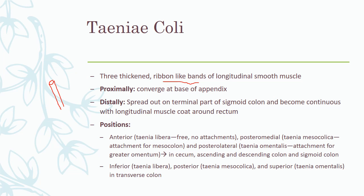The cecum, the ascending colon, the transverse colon, the descending colon, and finally the sigmoid colon — all of these portions of the large intestine have the teniae coli. Once we reach the terminal part of the sigmoid colon, these teniae coli become continuous again with the longitudinal muscle coat around the rectum. So the longitudinal muscle coat splits in the region of the large intestine to form three thicker ribbon-like bands, and once it reaches the rectum these muscle bands become continuous again as a longitudinal muscle coat.